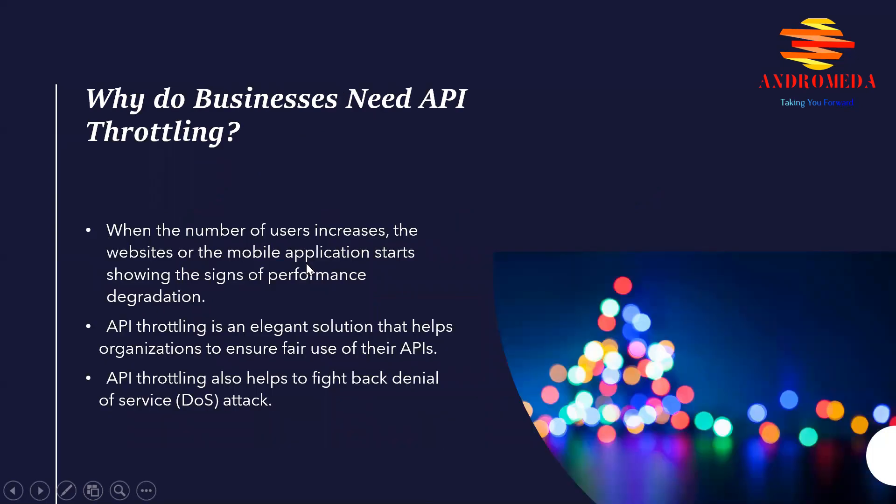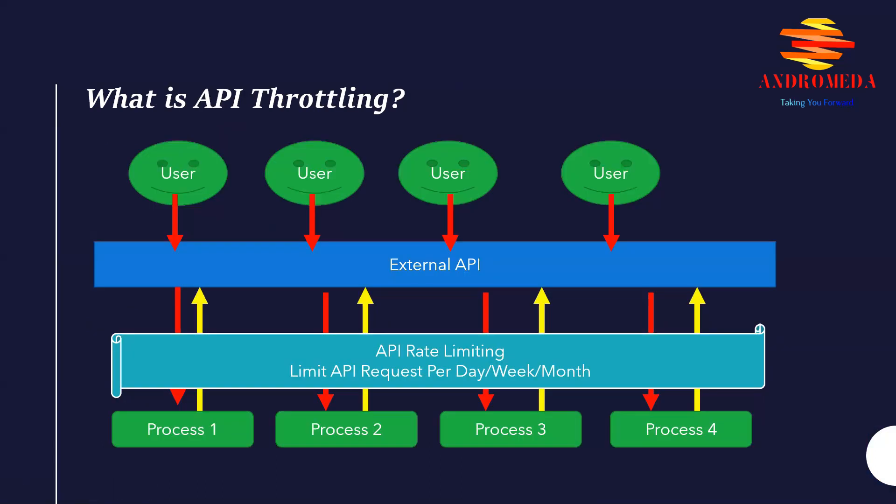API throttling also helps to fight back denial of service attacks, called DoS, where a malicious user sends enormous volumes of requests to bring down a website or a mobile application. As the number of online users increases, businesses need to implement API throttling mechanisms to ensure fair use, data security, and prevent malicious attacks.